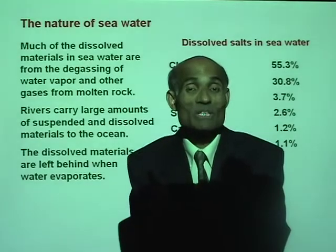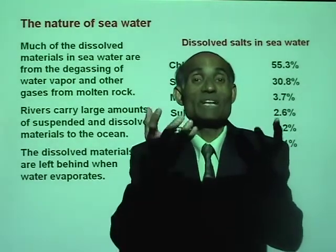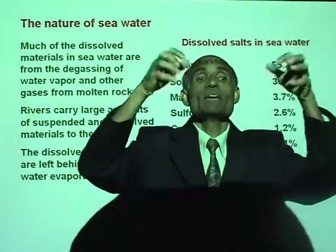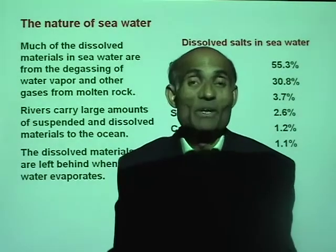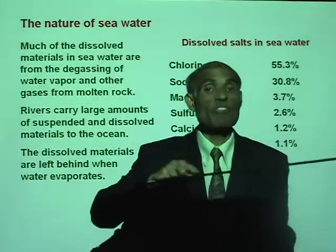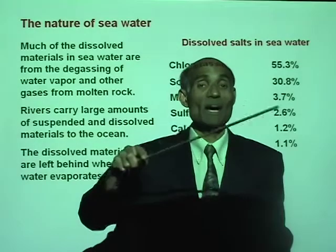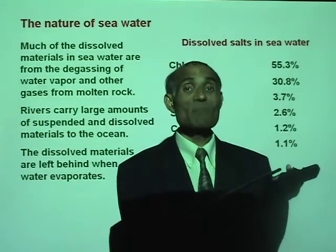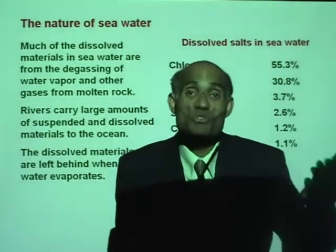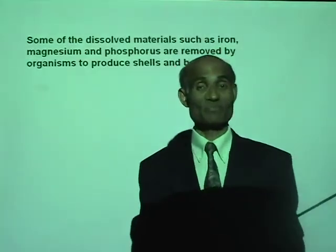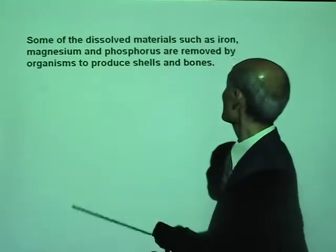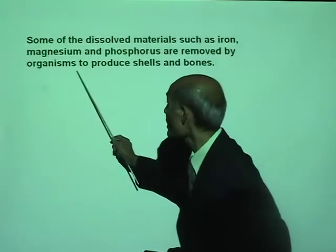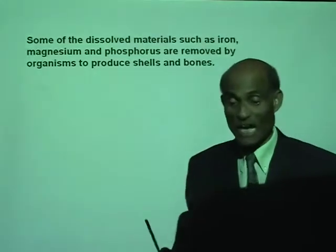If you take some salt water and heat it, when it boils and evaporates away, the salt will be left behind. In fact, there are many places even now which produce salt that way from seawater. Some of the dissolved materials such as iron, magnesium, and phosphorus are removed by organisms to produce shells and bones.